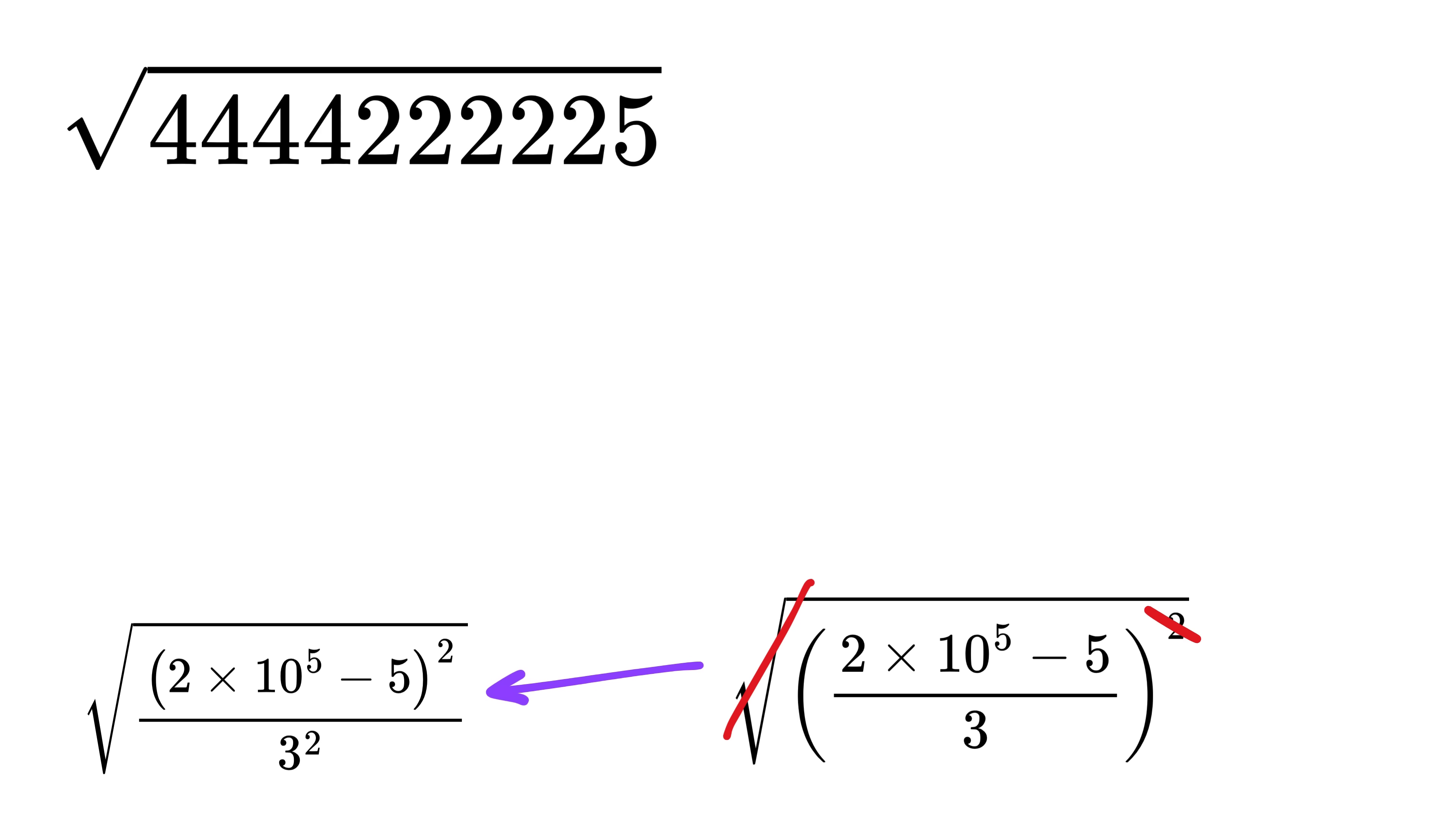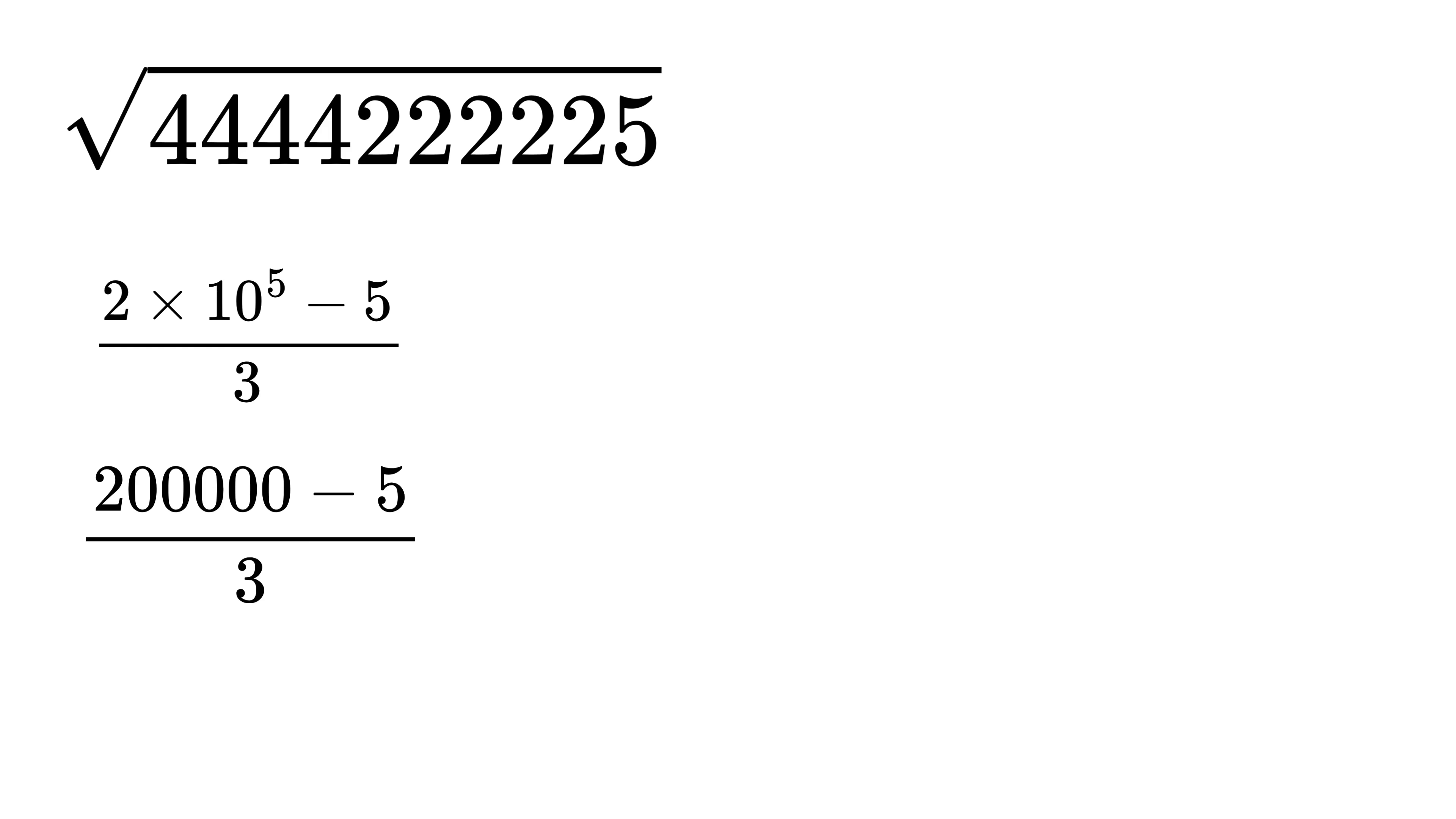And we will be left with this: 2 times 10 raised to 5 is 200,000, and minus 5 is this number, and that divided by 3 gives 4 sixes with a 5.